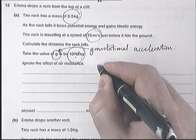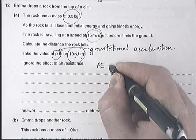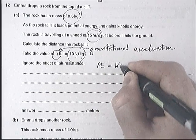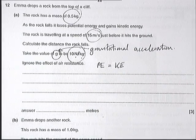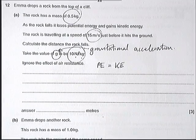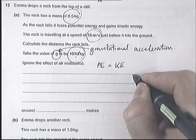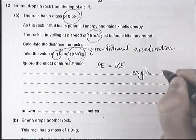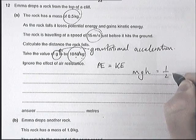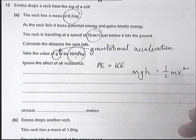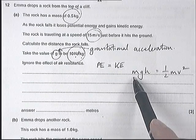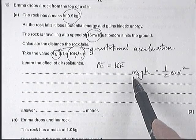The idea is that gravitational potential energy equals the kinetic energy it has when it hits the ground. You have this written in the equation sheet in this form: mgh equals half mv squared. We know the mass, and it's the same mass on both sides of this equation.